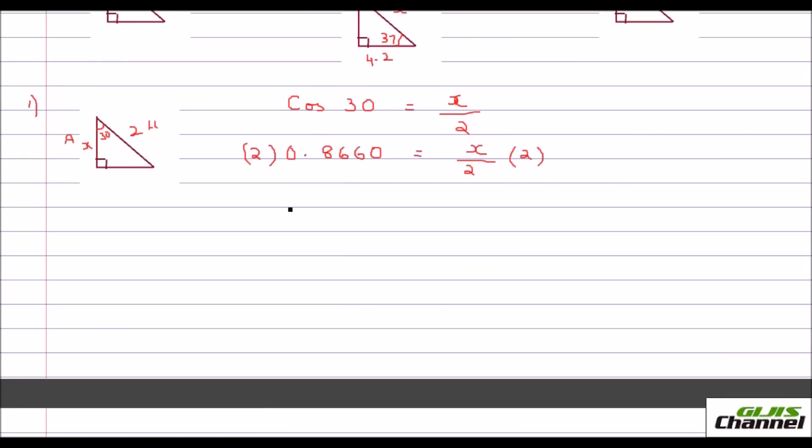So what happens? This would give you 1.7320 equals, here the 2 will get cancelled. So you have x.